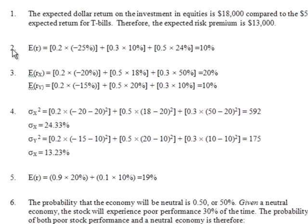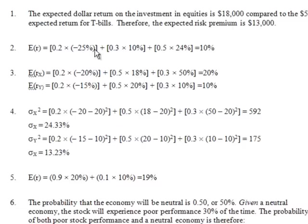Here's the solution for problem two. You just take the weighted average: the probability of a bear market is 0.2 times the return in that state, which is minus 25%. You keep doing this for all three possible outcomes, giving you three terms, and the answer is 10%.